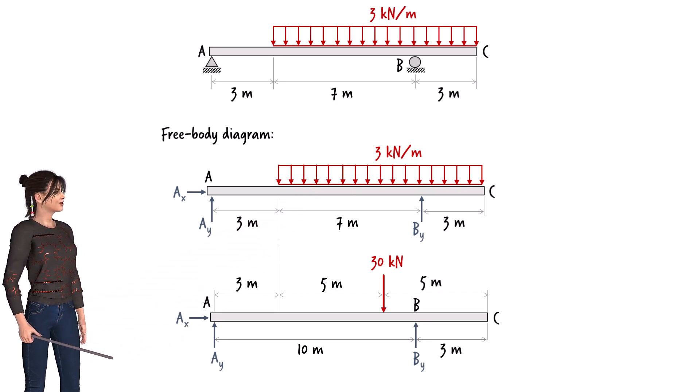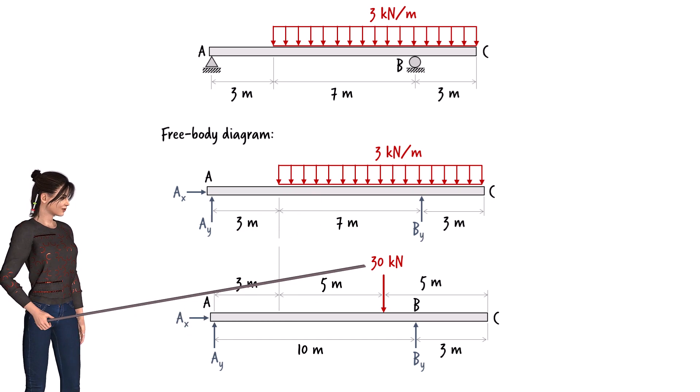Since the rectangle has a height of 3 and a base of 10, its area equals 30. So, the equivalent concentrated load's magnitude is 30 kN.